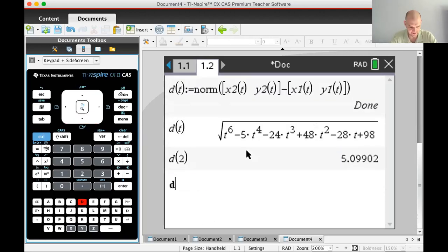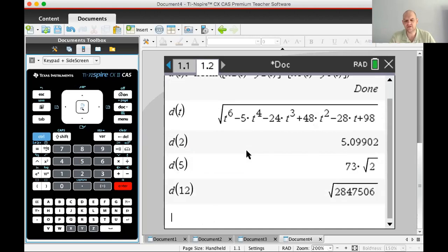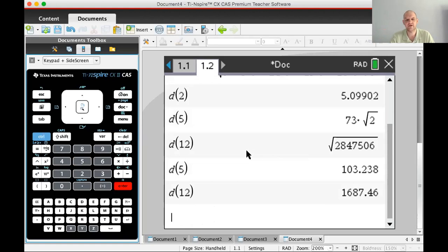Now what's nice is that d(t) is a function, so I can just use it. I can do d(5), d(12). Let's go with decimals. At t = 2, we get 5.09902. At t = 5, we get 103.238. At t = 12, they're incredibly far apart: 1687.46.